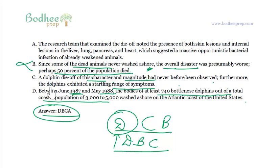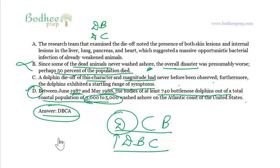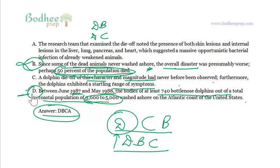My point is that DB is a better pair than DC. You might wonder why. D speaks of the number of deaths — what does B speak of? B also speaks of the number of deaths. Perhaps 50% of the population died — that is a probability. So the statistical count which is there in statement D is continued in B. You cannot separate them.